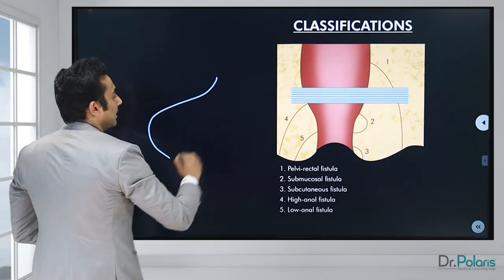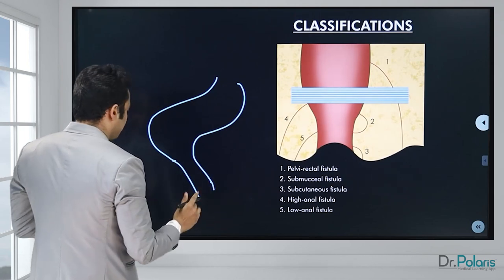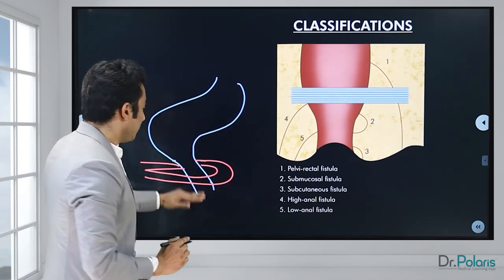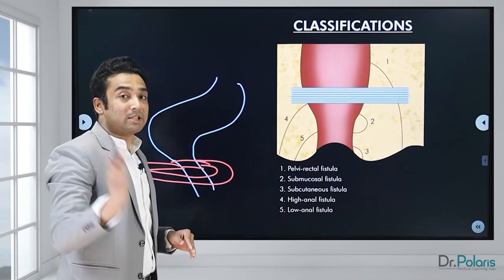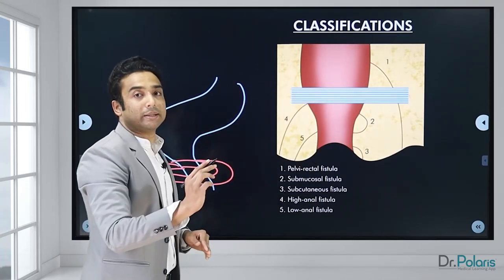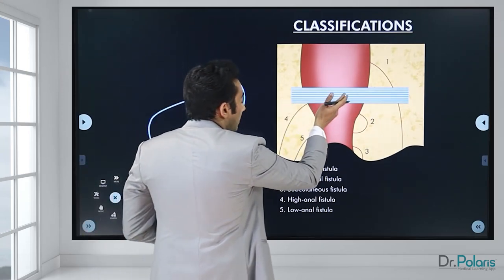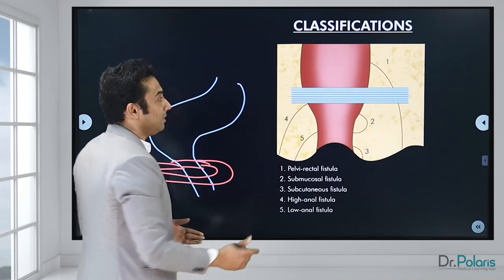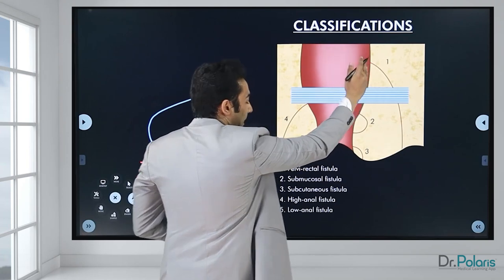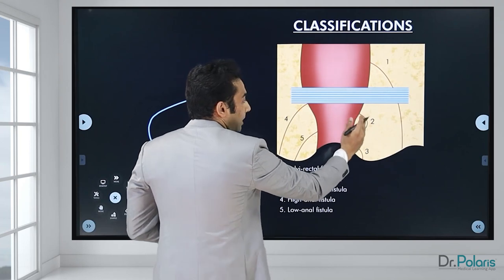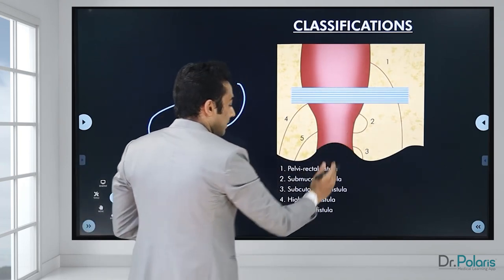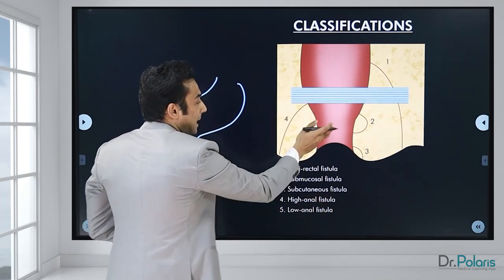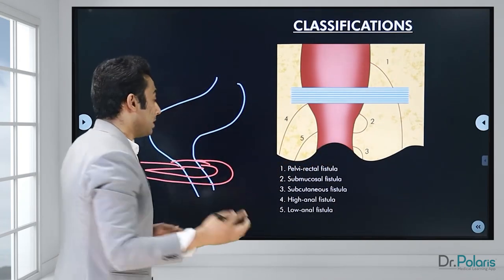The anorectal ring divides the rectum from the anal canal. Any fistula with an internal opening at the anorectal ring or above is called a high fistula; any fistula with an internal opening below the anorectal ring is a low-level fistula. For example, pelvirectal fistula goes above the anorectal ring — high level. Submucosal and subcutaneous fistulas, which are below the anorectal ring, are low-level fistulas.